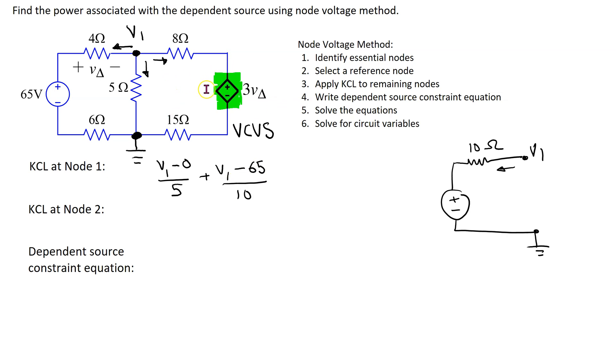Similarly, this branch current can be written by redrawing this part of the circuit as follows. We have V1 and we combine the two resistors in series. So this gives 23 ohm and then we have the dependent source going to ground and this is 3 V delta. So we can use this redrawn circuit to write the expression for this branch current. So this gives V1 minus 3 V delta divided by 23 is equal to 0.